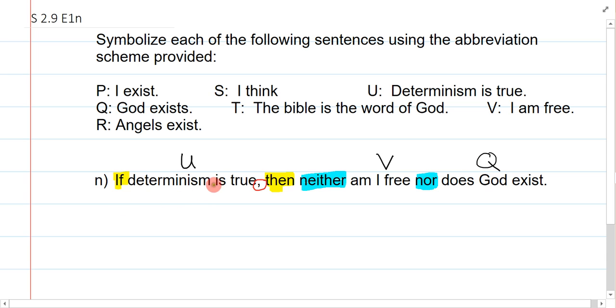Now, this is not so bad. All I have to ask is which is the main connective. Is it going to be this neither nor thing, or is it the if-then? Well, I just need to look at the comma and realize that my main connective must be the if-then. So, I have to preserve it as the main connective, which means U is my antecedent, and then here's my consequent.